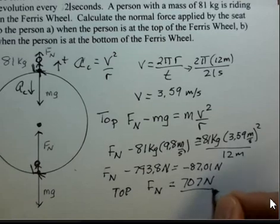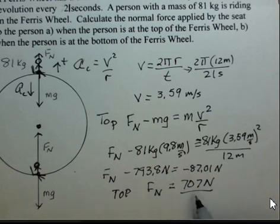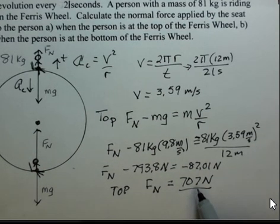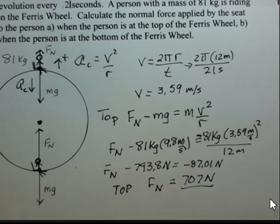Could this be reasonable? Yes, the person's weight is 793.8. That needs to be the dominant force. The upward normal force is 707. That's less than the weight. That will create a net force towards the center of the circle.